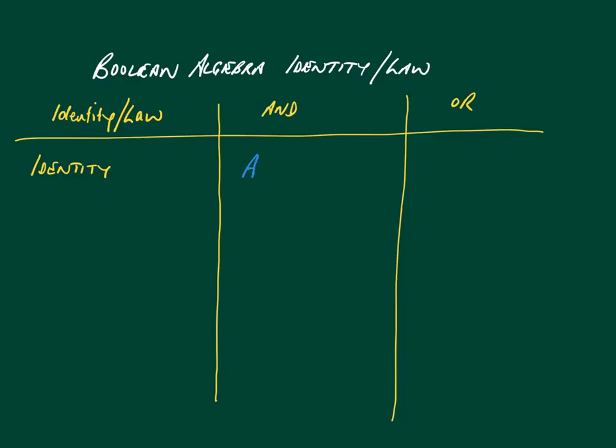For identity, if we use the 'a' symbol, a AND 1 will give us an output of whatever a is. And a OR 0 will give us an output of whatever a is.